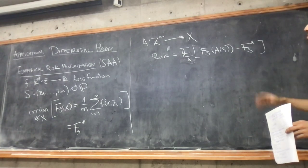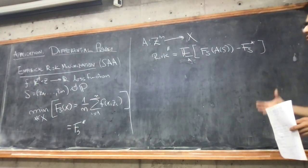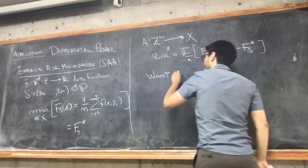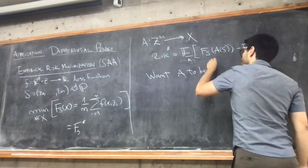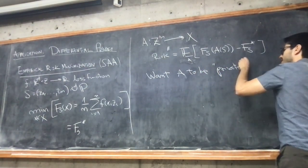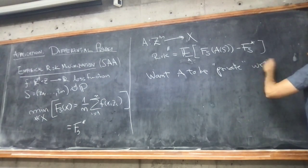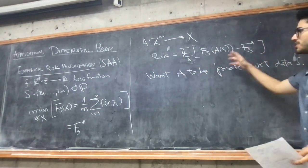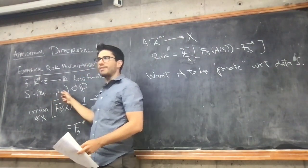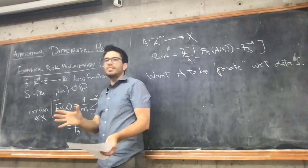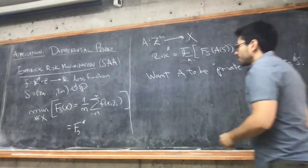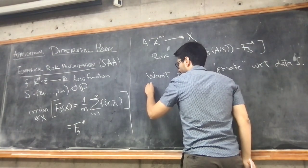What I want to impose — and this might seem out of the blue, but there are good reasons to do this — is that we want A to be private with respect to the data. I need to formalize what it means that this algorithm A is not leaking information about some of the individuals I have here as samples. I'm going to write a definition — this is a well-established notion of differential privacy.